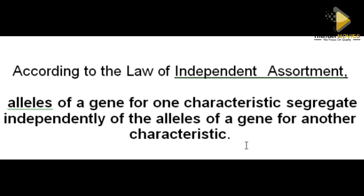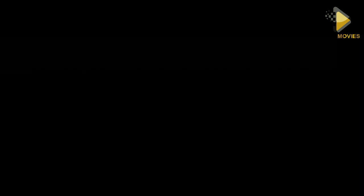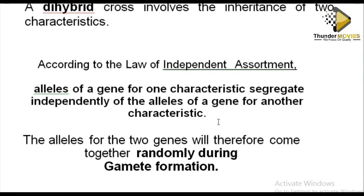We say that alleles of a gene for one characteristic segregate independently of the alleles of a gene for another characteristic. So during inheritance, the alleles of one character — for example, height — should not influence the alleles of another character, for example skin color. These two must separate independently during the formation of gametes.